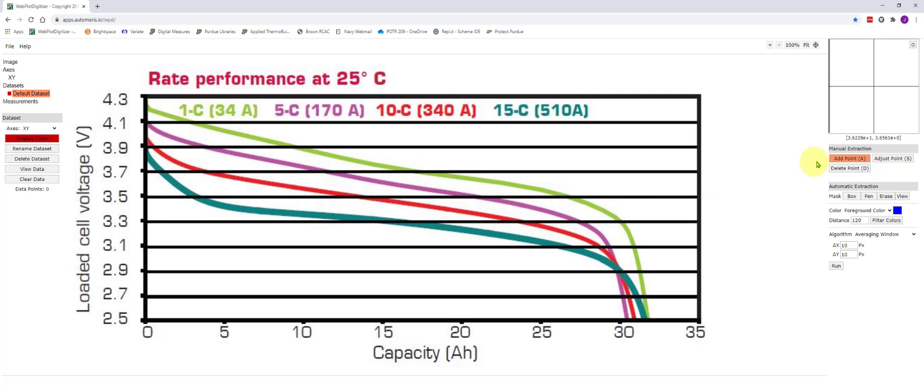At this point you can start extracting data. If you look over here on the right we're in the manual extraction menu and I currently have add points selected. So if I wanted to select the 1c curve which is shown in green I could start picking points and adjusting them as I need to with the arrows.